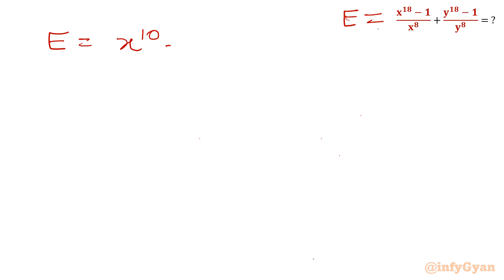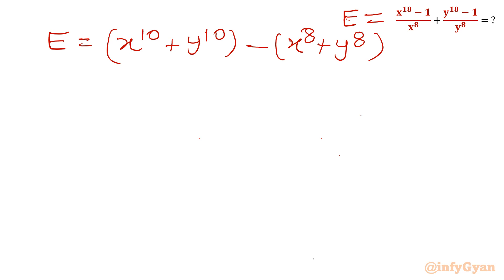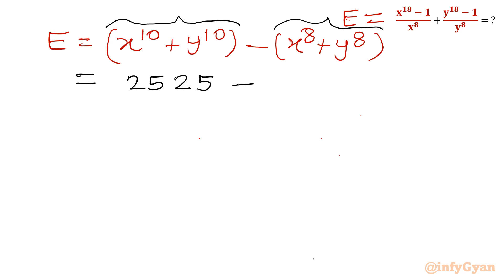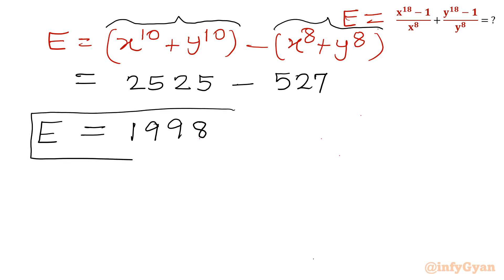Now it is time to evaluate our expression E. E = x^10 + y^10 − (x^8 + y^8) = 2525 − 527 = 1998. This is our final answer, and this brings the end of this video. I hope you liked this video. Thank you so much for watching. Do not forget to like, share, and subscribe. Bye-bye, take care of yourself.